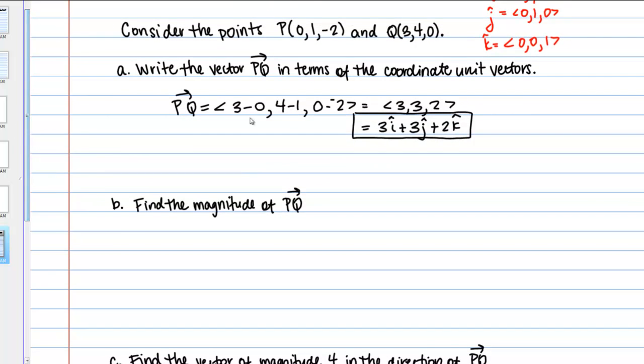In part B, we want to actually find the magnitude of this vector. Since we have it already written as a position vector, this won't be too challenging. All it's going to be is the square root of the sum of the squares of the components. The square root of 3 squared plus 3 squared plus 2 squared. That's the square root of 9 plus 9 plus 4. That looks like it should be the square root of 22. The magnitude of this vector is the square root of 22.